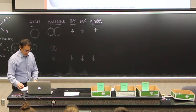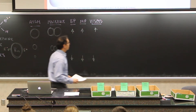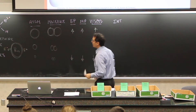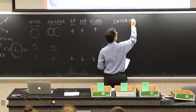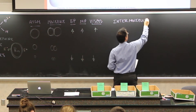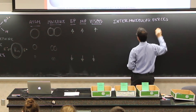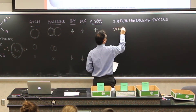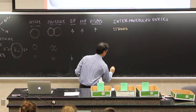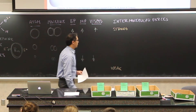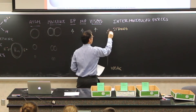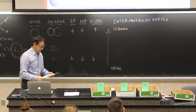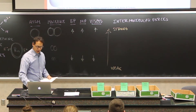Now we have different types of intermolecular forces — some strong ones and some weak ones. We're going to go up the scale to our stronger intermolecular forces, and down here would be our weaker intermolecular forces. I'm going to start out with the weakest intermolecular force.